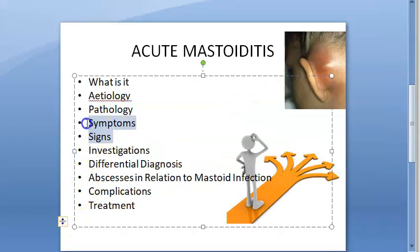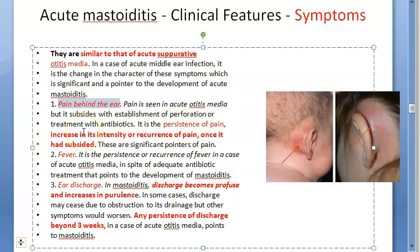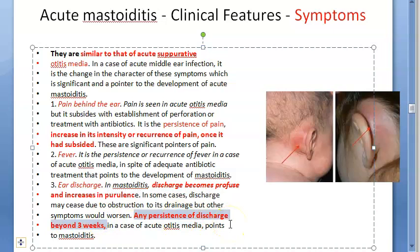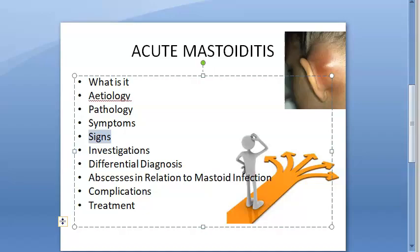The clinical features: symptoms include pain behind the ear — even after the otitis media has resolved, there is persistent pain behind the ear, meaning it has spread to the mastoid. There is fever, obviously due to infection. There is ear discharge which is profuse and increases in purulence. Persistence of discharge beyond three weeks suggests it may be coming from the mastoid. So the three key symptoms are persistent pain behind the ear, fever, and persistent ear discharge.